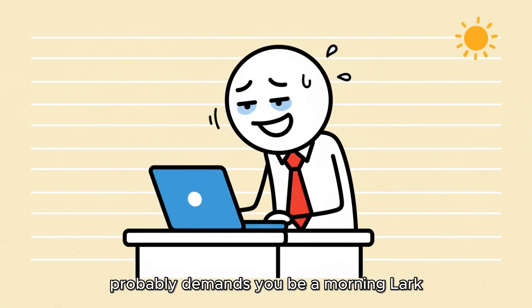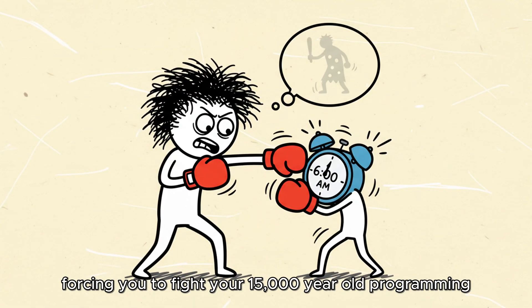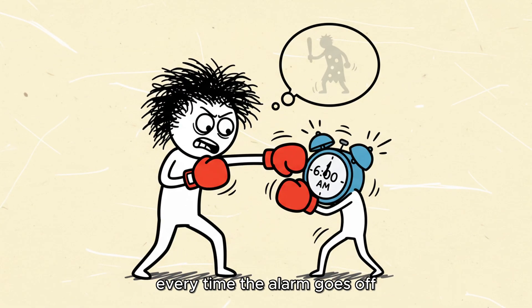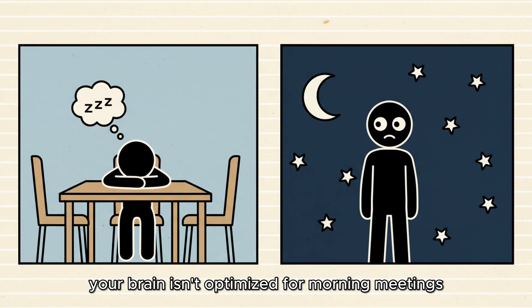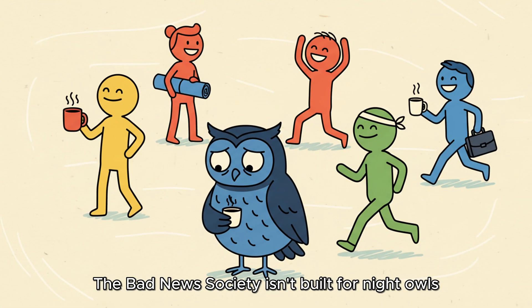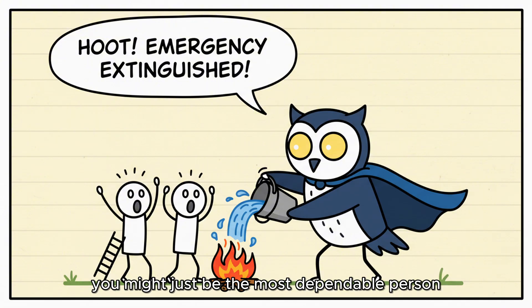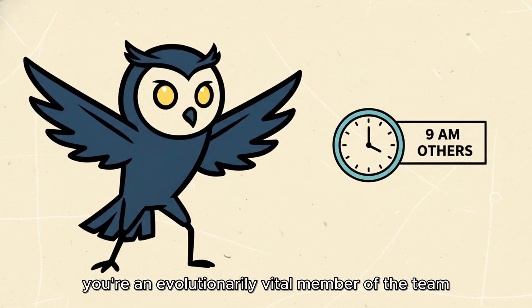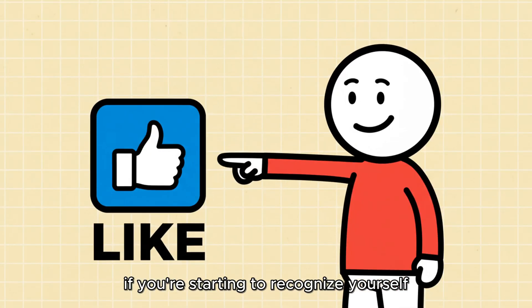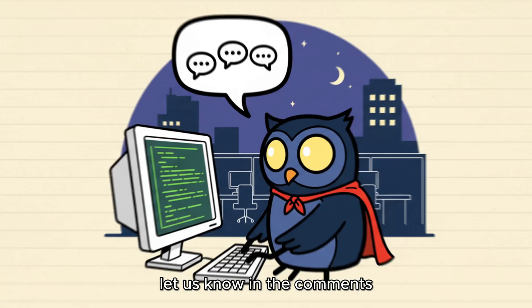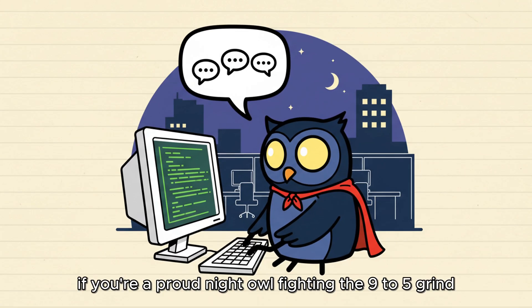Today, your corporate job probably demands you be a morning lark, forcing you to fight your 15,000-year-old programming every time the alarm goes off. If you're like Sarah, a software developer who crushes complex coding problems between 1 a.m. and 3 a.m., your brain isn't optimized for morning meetings. It's optimized for nocturnal vigilance. The bad news, society isn't built for night owls. The good news, you might just be the most dependable person in an emergency. You're an evolutionarily vital member of the team, just in the wrong time zone. If you're starting to recognize yourself in these traits, hit that like button. Let us know in the comments if you're a proud night owl fighting the 9-to-5 grind. Your interactions tell YouTube that this history lesson is worth sharing.